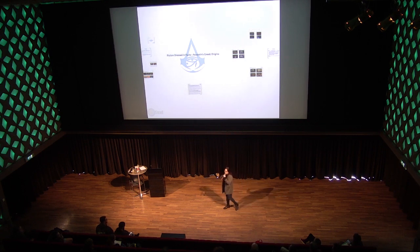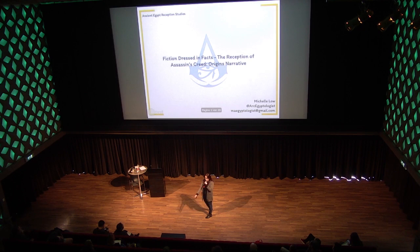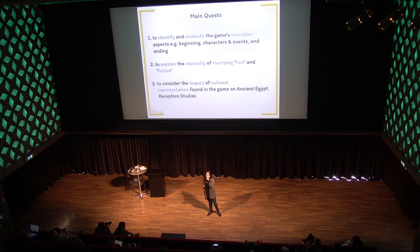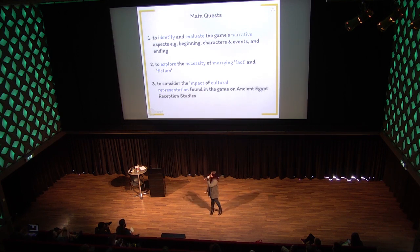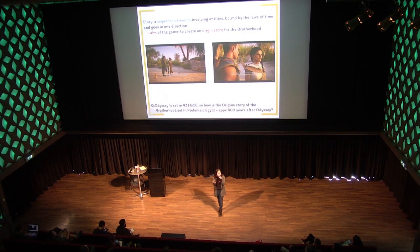My presentation is focused on how Assassin's Creed Origins created a relatable and believable world by creating fiction dressed in facts. I'm going to explore why it was necessary to marry fiction and fact, and how specifically Egyptomania is very important. Even though I am an Egyptologist, I'm not a traditional one, so I might get kicked out for saying it's okay to represent Egypt as popular media represents it.